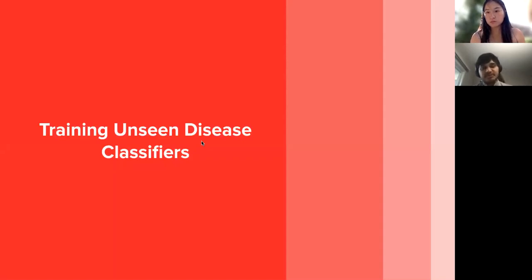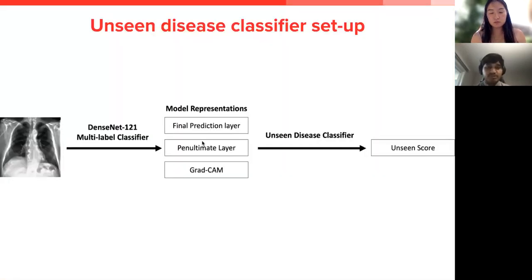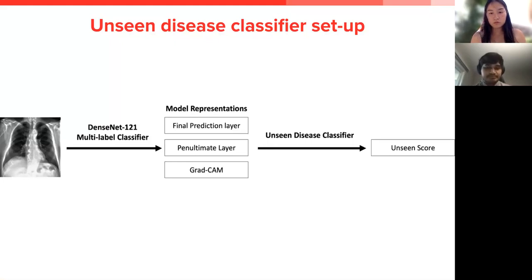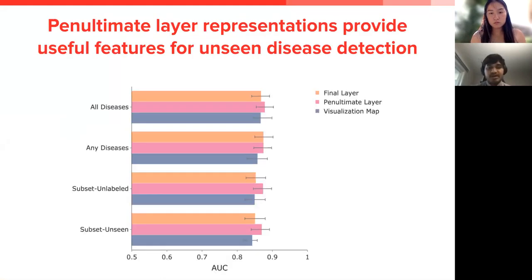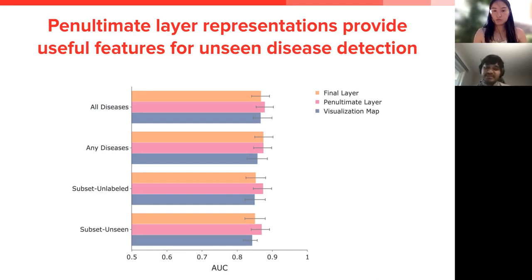Our third and final experiment was to explore the formation of suitable baselines to detect unseen diseases using feature representations from our trained multi-label models. We extracted three feature representations from each of our four models: the final prediction layer, the penultimate layer, and a Grad-CAM visualization map. We passed these feature representations for a validation set to a binary classifier trained to output an unseen disease score. We found that the penultimate layer performs best as a feature for detecting an unseen disease, followed by the final layer, then the visualization map. Out of the four multi-label classifiers, feature representations from the any-disease model perform best in detecting unseen diseases.